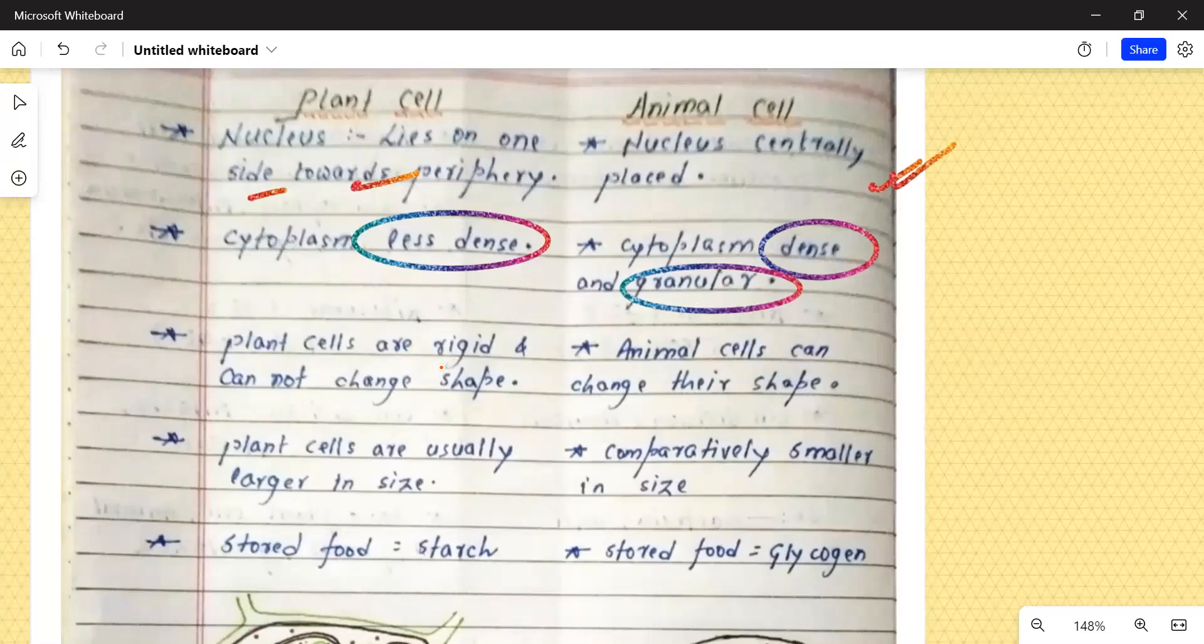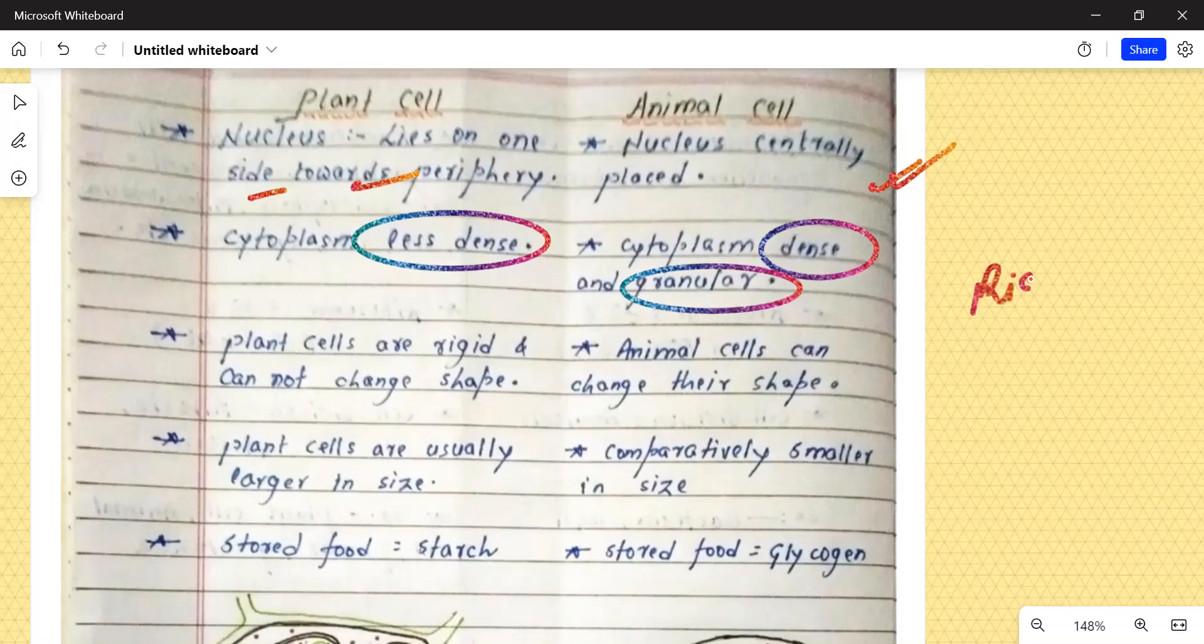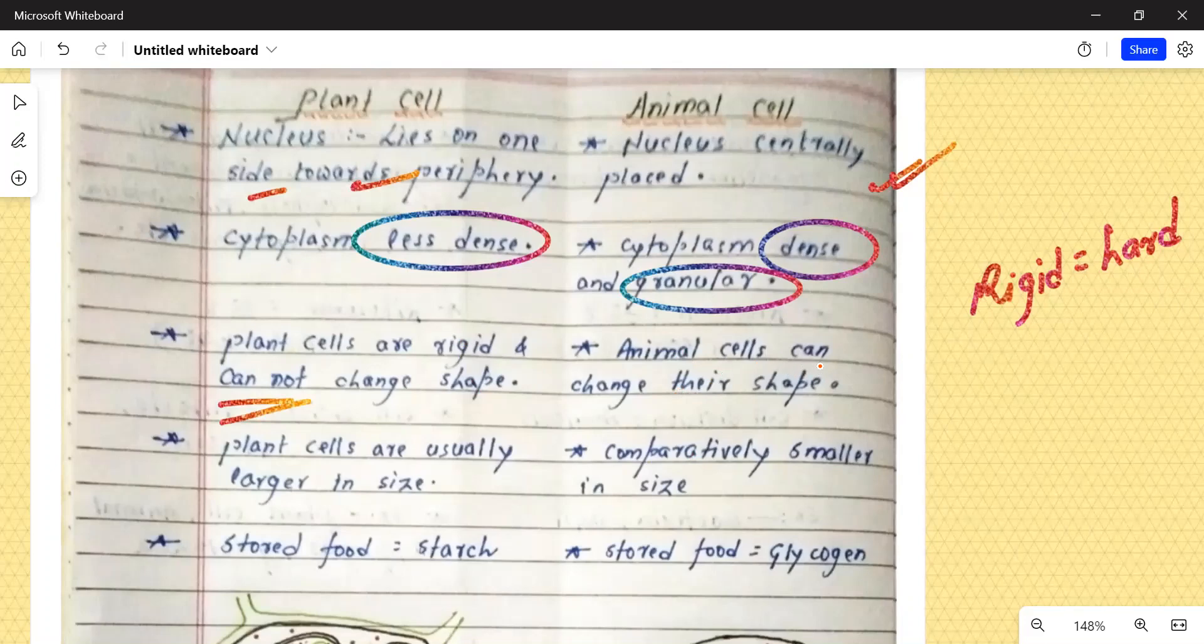Plant cells are rigid and cannot change shape. Plant cells jo hote hai, woh rigid hote hai. Rigid matlab ki tough hote hai, ya phir isko hum dusre bhasha mein hard bhi keh sakte hai. Ye kaise hote hai, hard hote hai and basically, ye shape change nahi karte. On the other hand, animal cells can change their shape. Hum log apne cells ke shape ko thoda bahut change kar sakte hai.